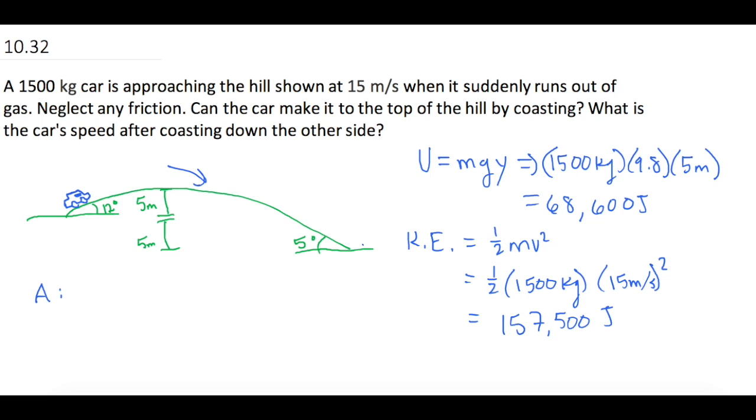Now they say, what's the speed when we get to the bottom of the hill? So now for part B. What is the final velocity at the bottom after it's coasted down the bottom of the hill?